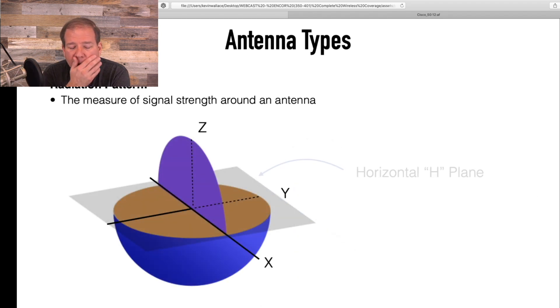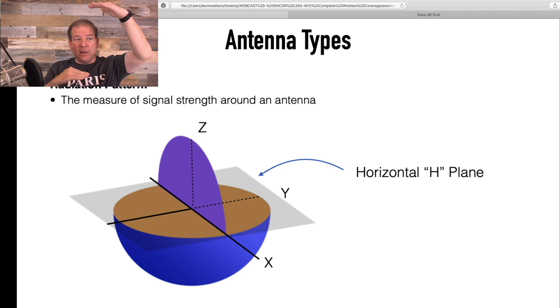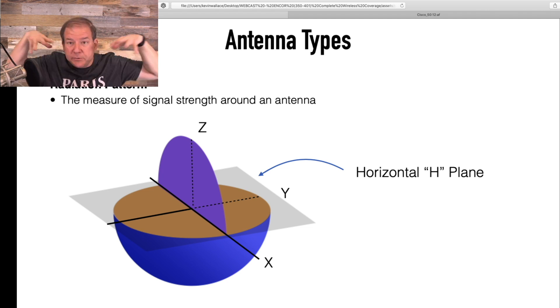And once we go into three dimensions, let's take that beach ball analysis again. In order to visualize it, we need to look at it from a couple of angles. I mean, if I just look, if I'm just sitting on the side of it, I'm just seeing the side view. If I look down from the top, I'm just seeing the top view. So I need a radiation pattern for both views.